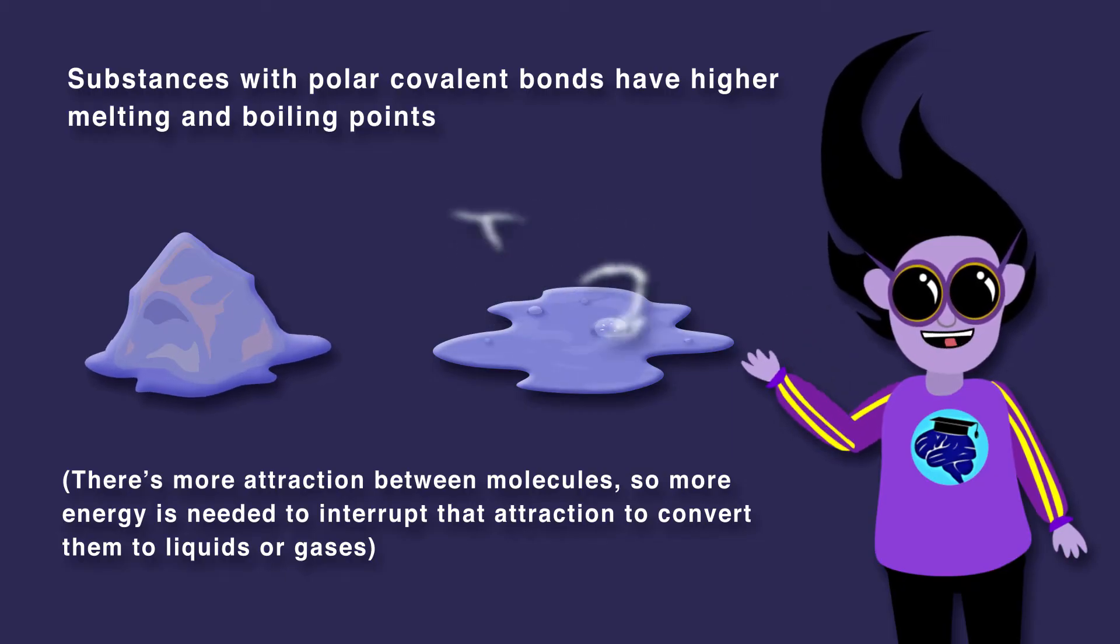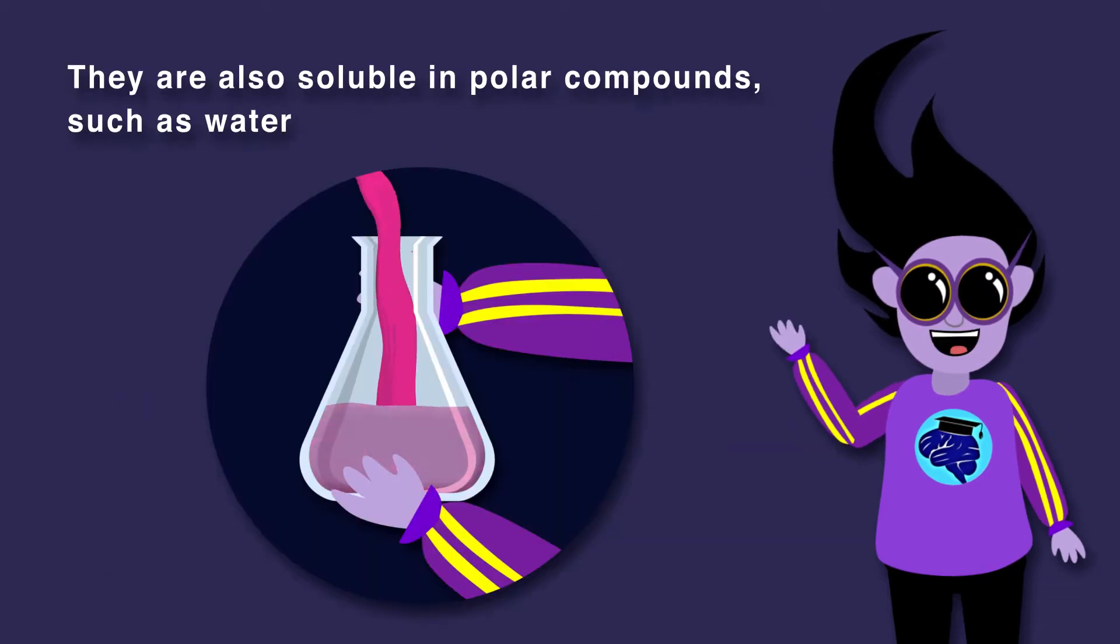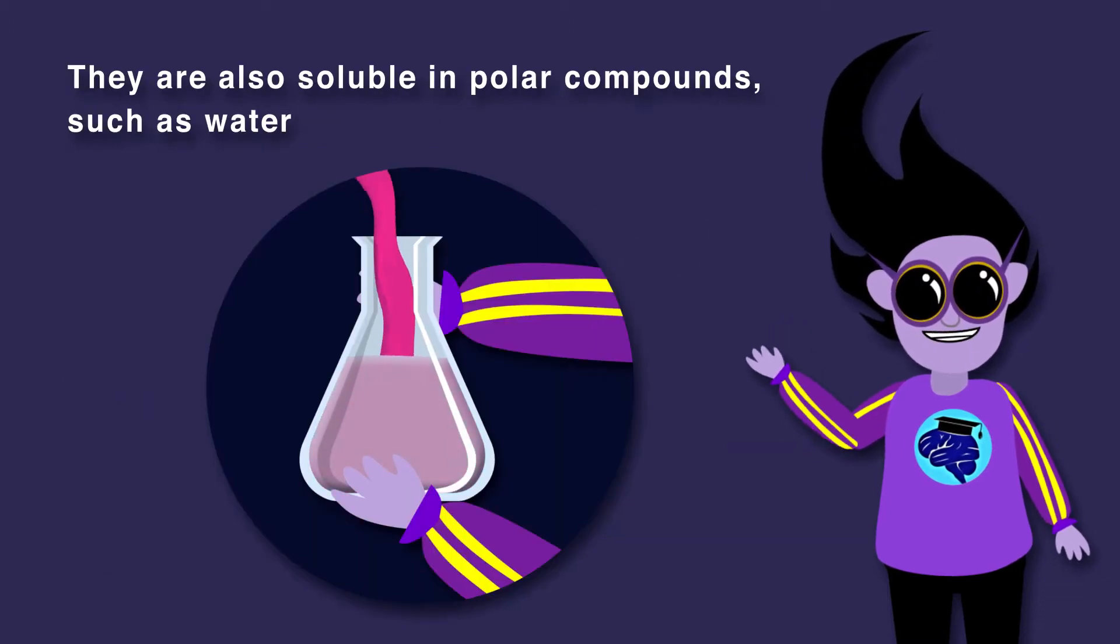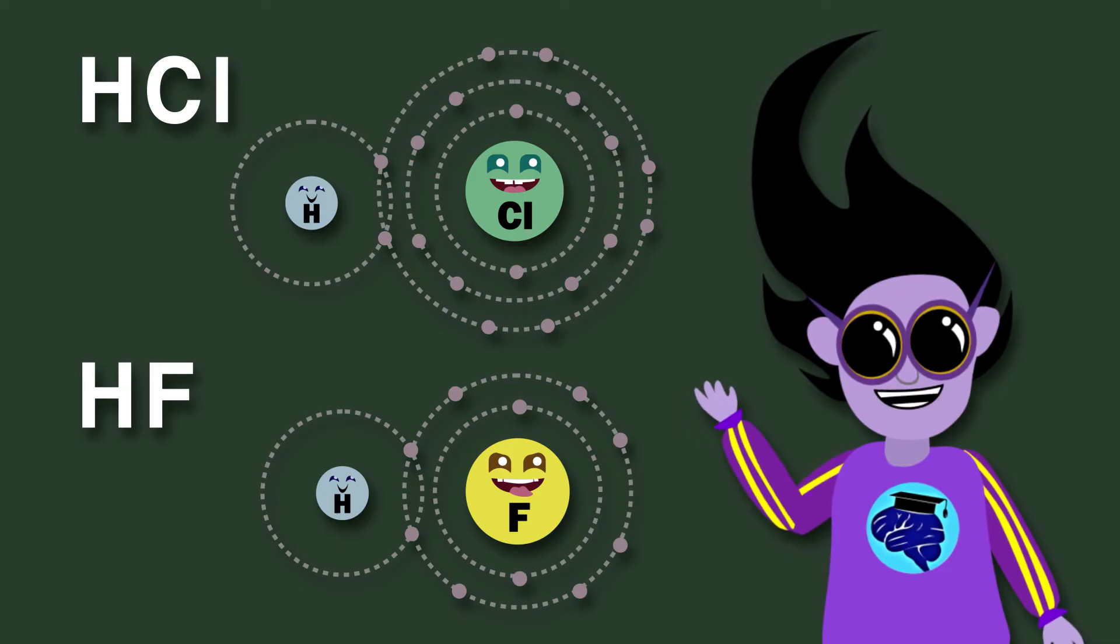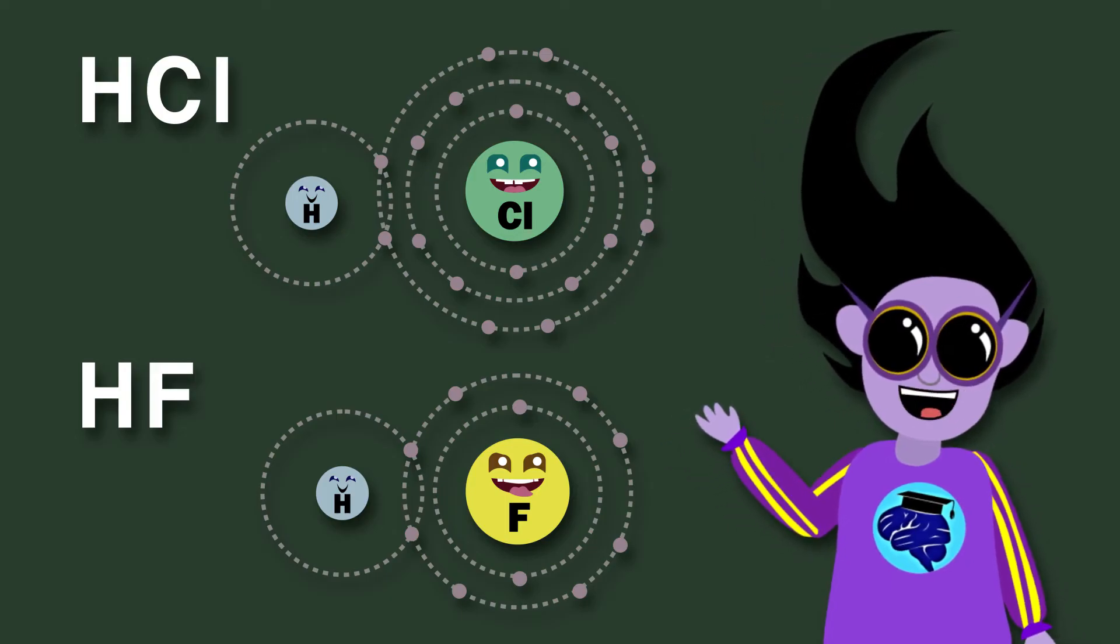Substances with polar covalent bonds have higher melting and boiling points. They are also soluble in polar compounds, such as water. HCl and HF are also examples of polar compounds.